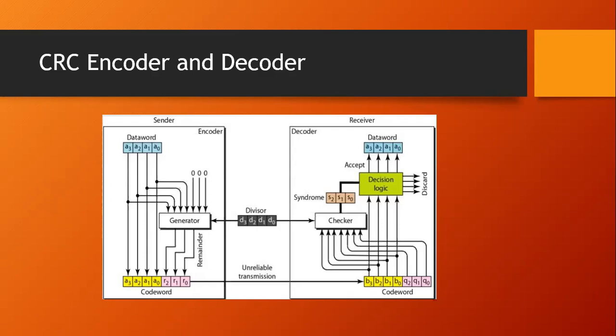Three extra bits are augmented to the data word, called augmented bits. The number of bits augmented is not always three — it depends on the size of the divisor. A division process takes place at the generator side, and the remainder, R2, R1, R0, is augmented to the data word. The four bits of the data word along with the remainder bits are known as the code word, which is then transmitted over the unreliable medium.